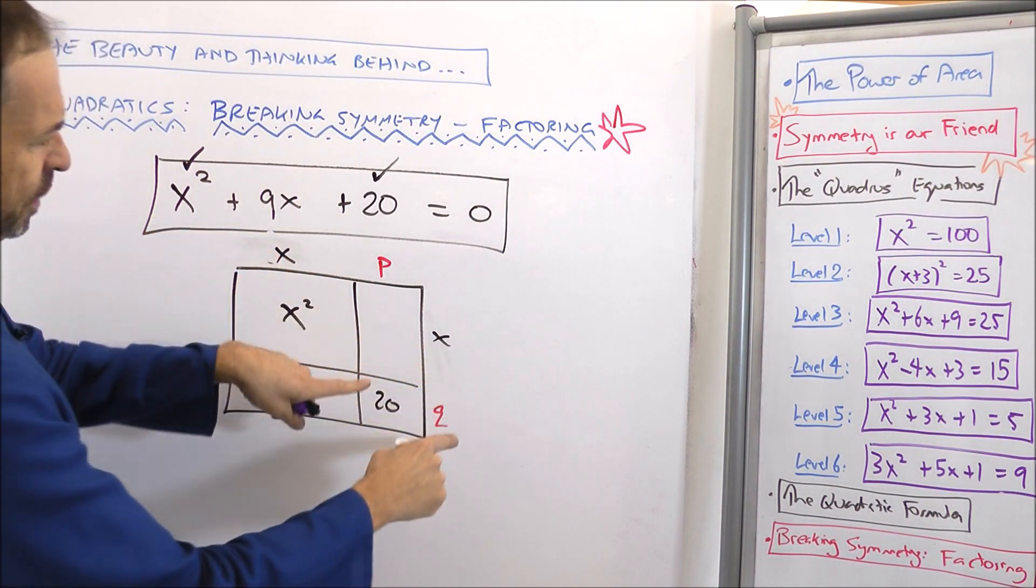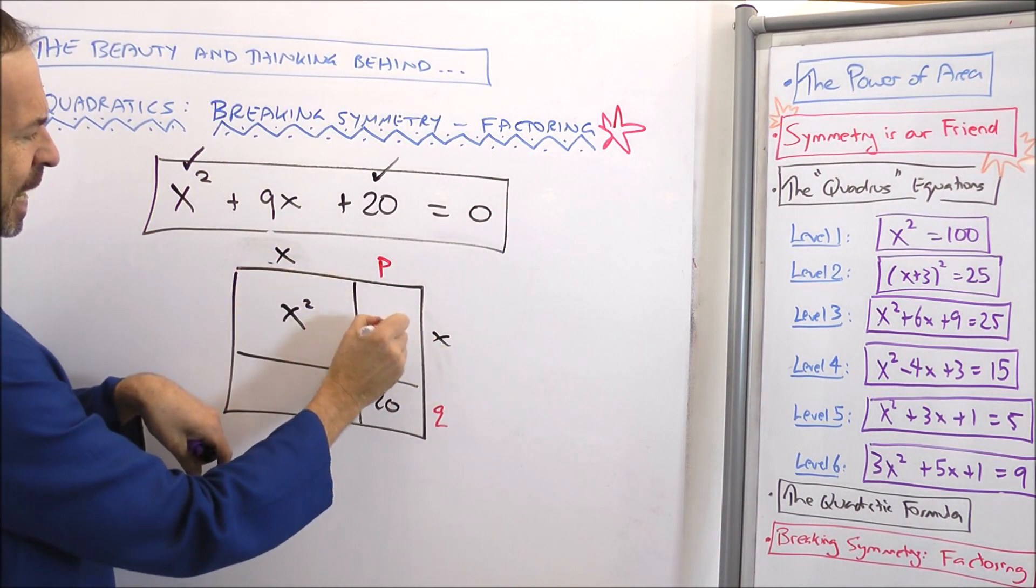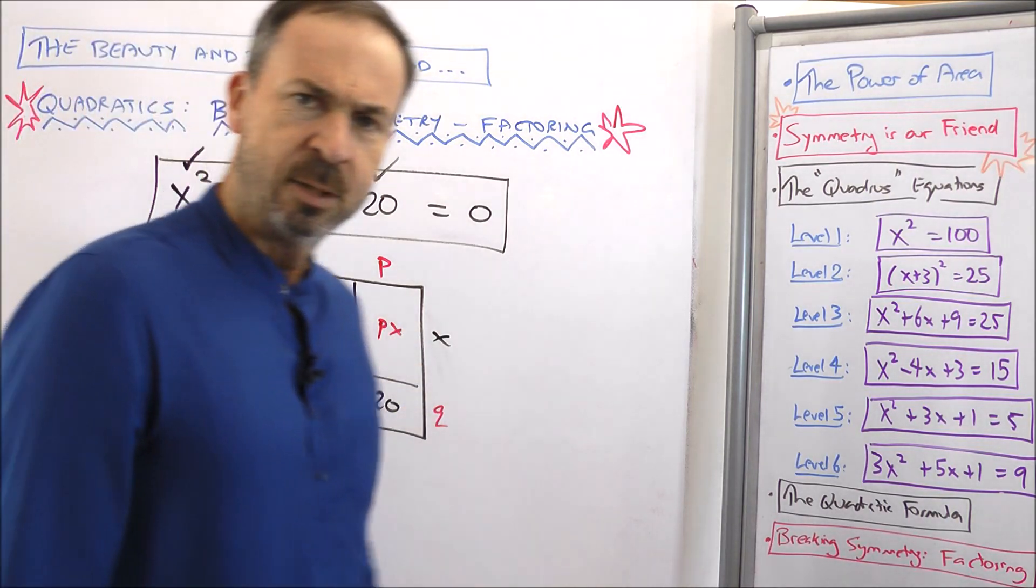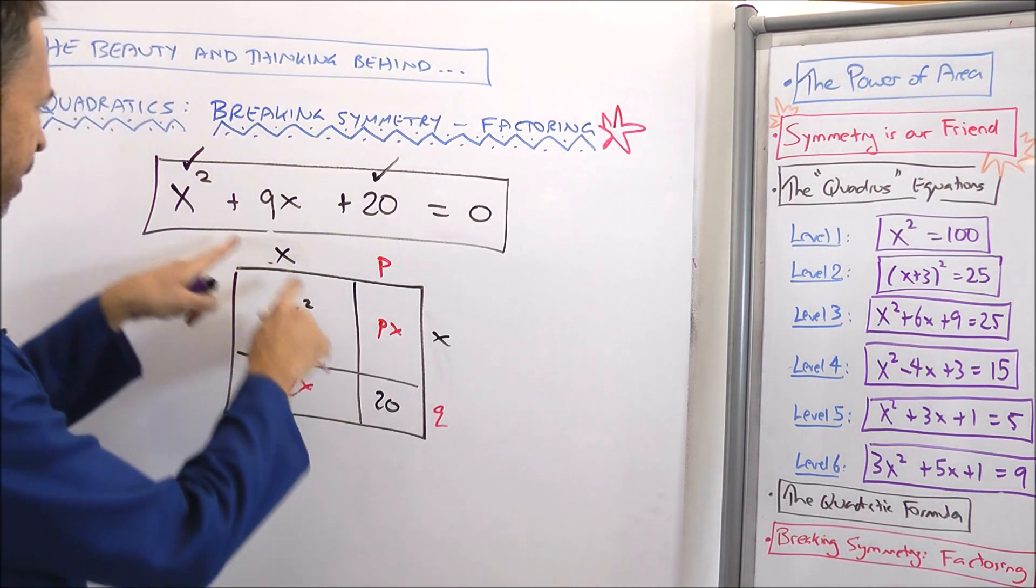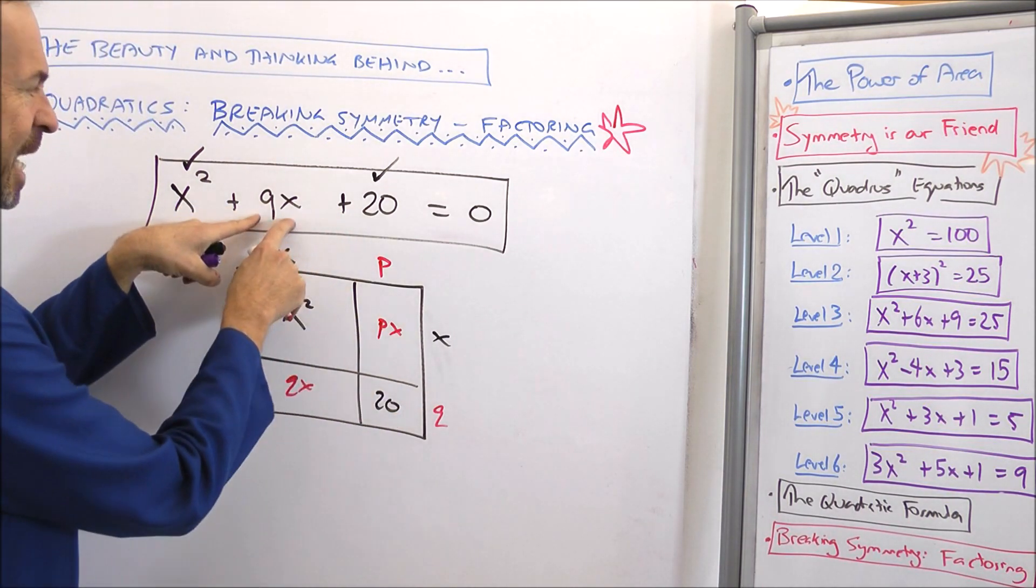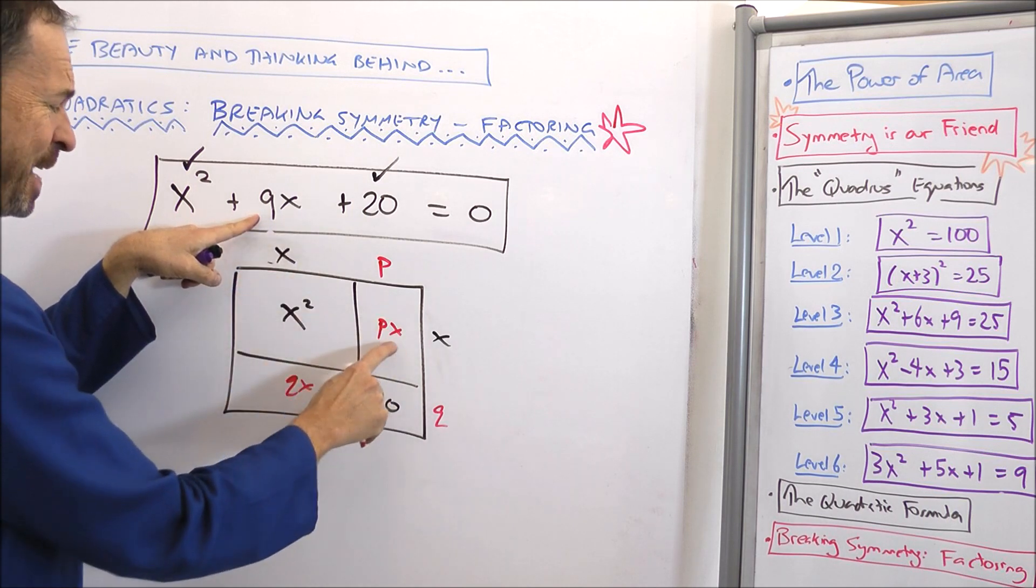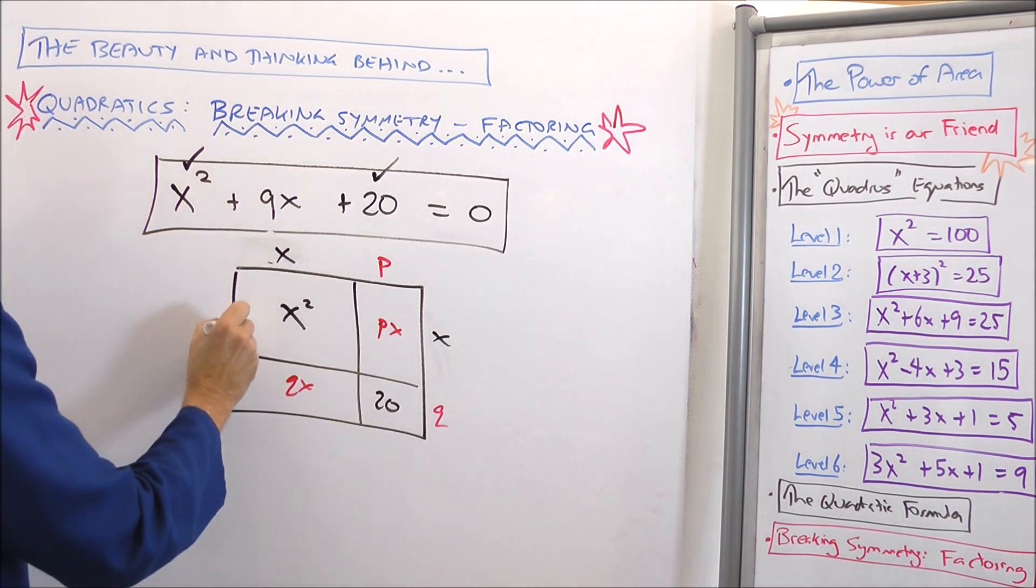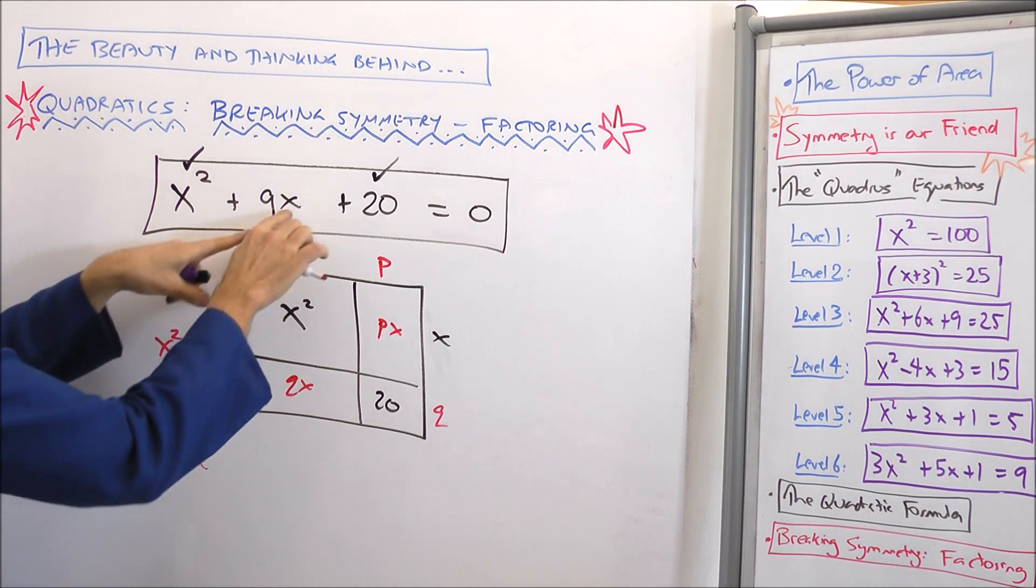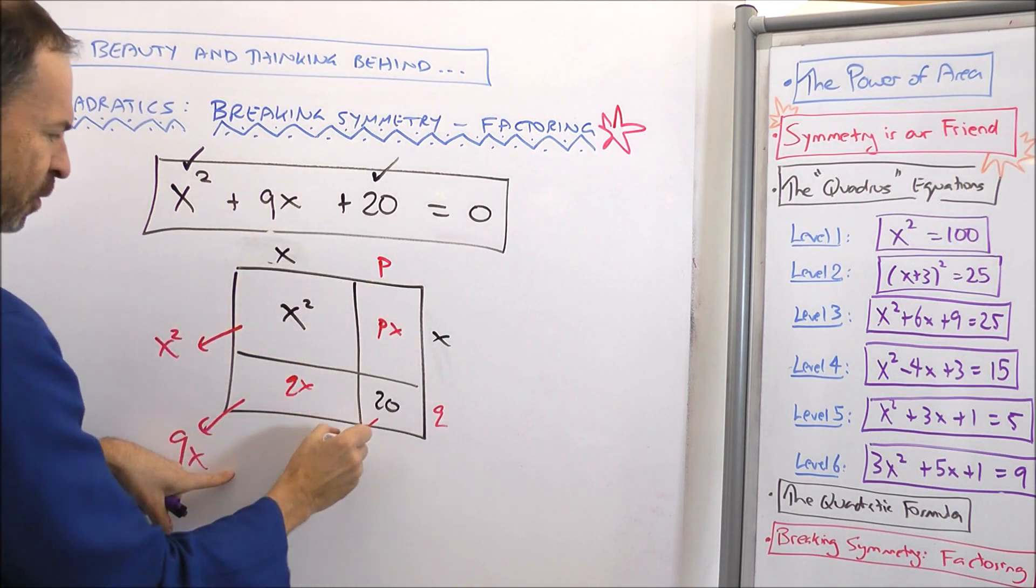So what must be true about p and q? Well, there'll be extra area. For example, this area would be px and this area would be x times q. That'd be qx. So we've got this picture here that's trying to have area x squared, got it, area 20, got it, and area 9x. And I've got a px and a qx. So that's x squared. That together should be 9x's. px and qx makes 9x, and I've got the 20.